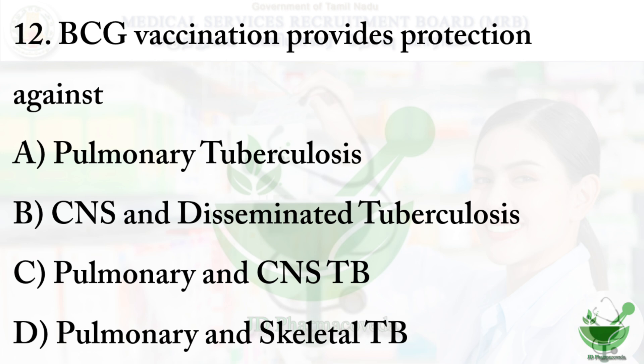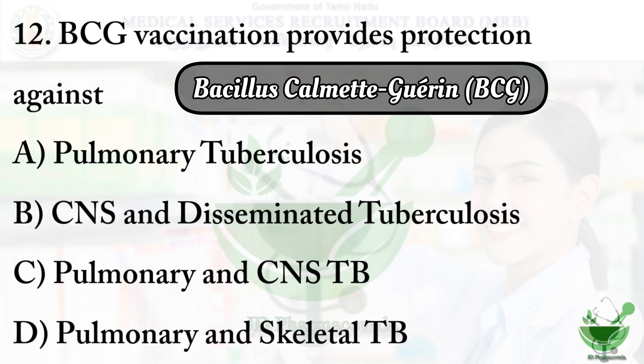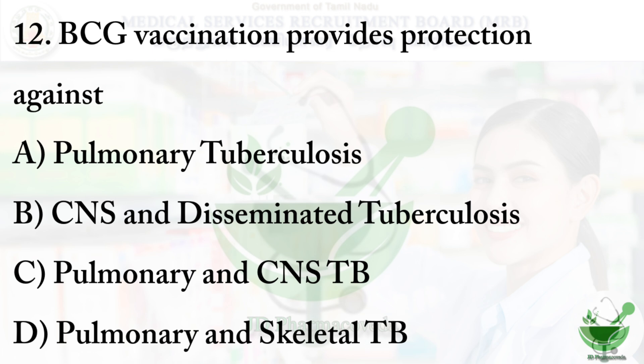Question number 12: BCG vaccination provides protection against which condition? BCG stands for Bacillus Calmette-Guérin. Options are: A) Pulmonary tuberculosis, B) CNS and disseminated tuberculosis, C) Pulmonary and CNS TB, D) Pulmonary and skeletal TB. The correct option is B — CNS and disseminated tuberculosis. 'Disseminated' refers to how tuberculosis spreads throughout the organs or body.